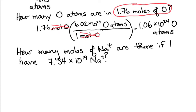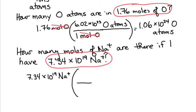So, straight dimensional analysis. Start with what the question is asking about. That's what's going to go on the outside. So, 7.34 times 10 to the 19th sodium ions. Avogadro's number tells us that there are 6.02 times 10 to the 23rd sodium ions in 1 mole of sodium ions.